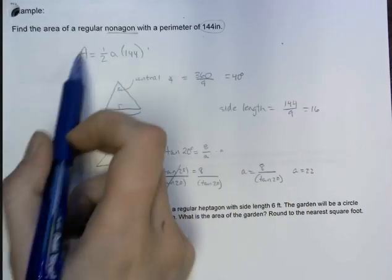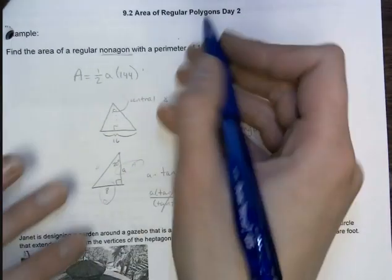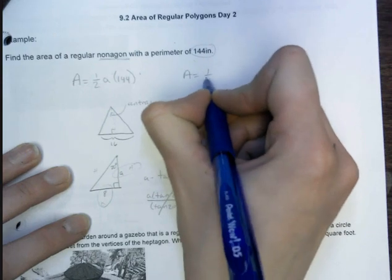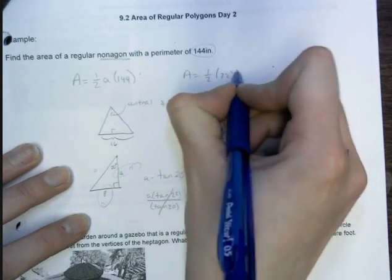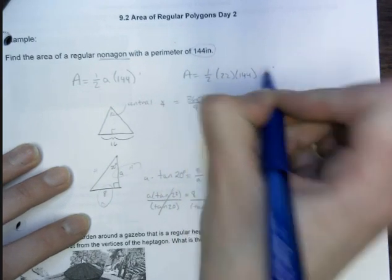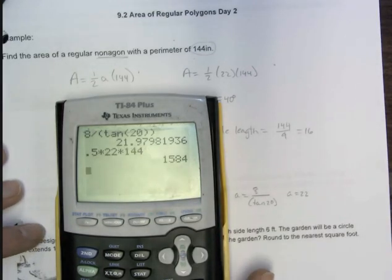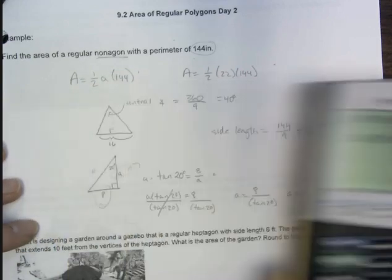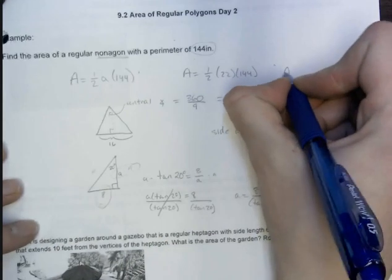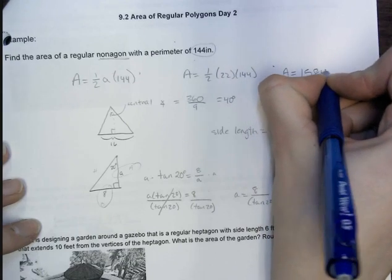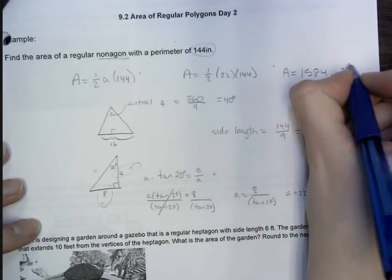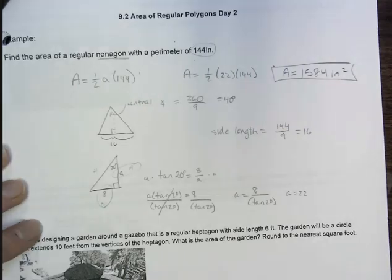So now I can come back to my formula, and all I was missing was the apothem. So now I have it, so I can do 1 half times 22 times 144. So we plug those in, I've got 0.5 times 22 times 144, 1,584. So area is 1,584, and then we've got square inches for our units.